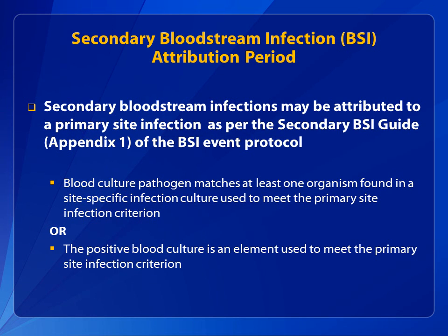Secondary BSIs may be attributed to a primary site infection if either of the following is true: the positive blood culture pathogen matches at least one organism found in the site-specific infection culture used to meet the primary site infection criterion, or the positive blood culture is an element used to meet the primary site infection criterion.